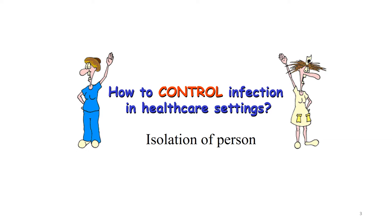How to control infection in healthcare settings? In healthcare settings, infection control practices are critical. They are very important to reduce the transmission of infections from one person to another - from a healthcare worker to a patient or visitor, from a visitor to a patient, or vice versa from a patient to a healthcare worker. So we can isolate the person to control infection.